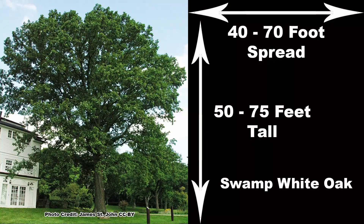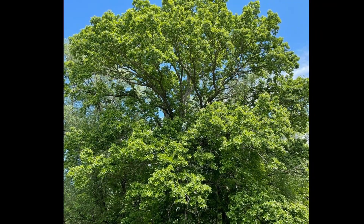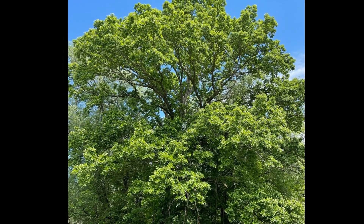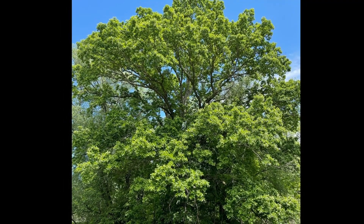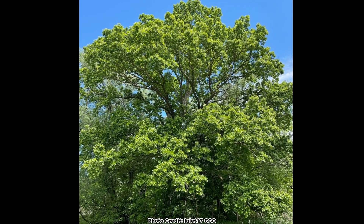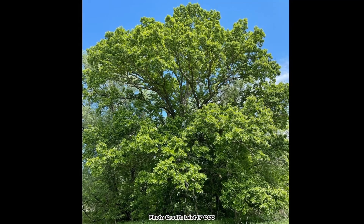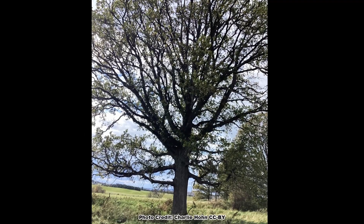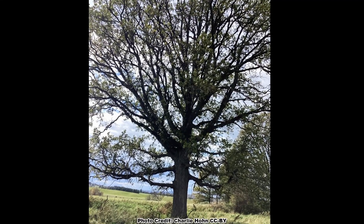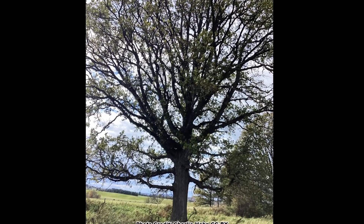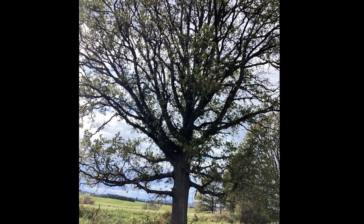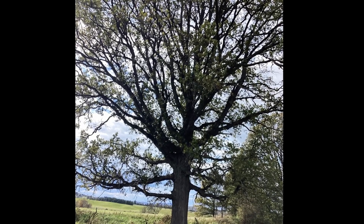Swamp white oak is a medium-sized oak and will grow to be 50 to 75 feet tall with a 40 to 70 foot crown spread. It usually has a single trunk and an irregularly shaped crown that may have a ragged appearance. Upper branches will be ascending or growing upwards, and the lower branches will be descending or drooping towards the ground.